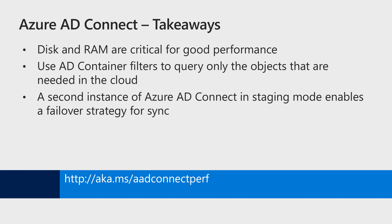The nature of the sync cycle benefits from a fast disk and enough memory. We also recommend that you have a failover strategy for the sync engine. You can use staging mode to have a hot standby machine that allows you to resume export in case the production machine is down. For this, it is critical to have consistent configuration across both machines. Thank you for listening, and we hope you tune in for more videos in the Azure AD Architecture series.